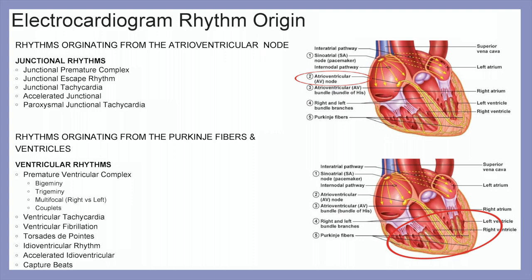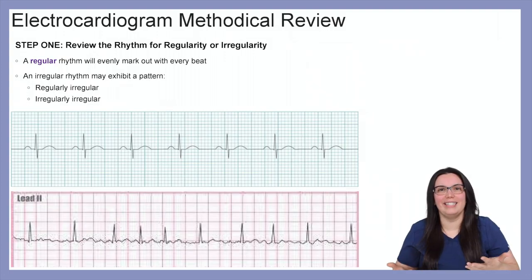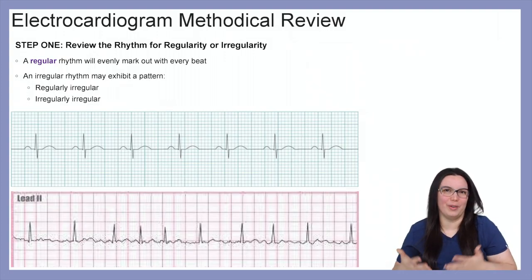Rhythms originating from the Purkinje fibers and ventricles are our ventricular rhythms. These include premature ventricular complexes — which can be bigeminy, trigeminy, multifocal, and couplets — ventricular tachycardia, ventricular fibrillation, torsades de pointes, idioventricular rhythms, accelerated idioventricular rhythms, and capture beats. To interpret an ECG, we use methodical review.